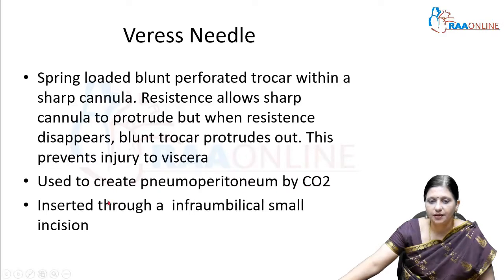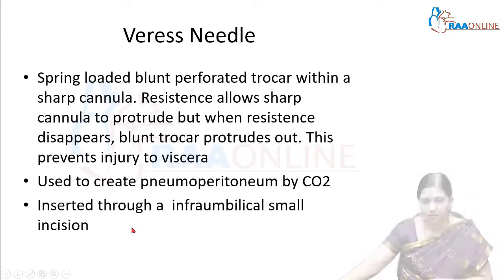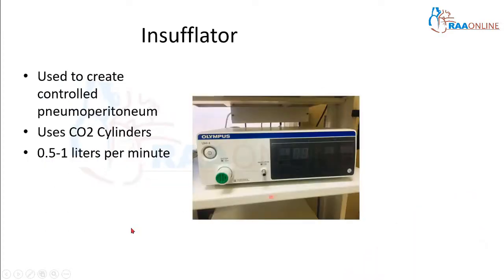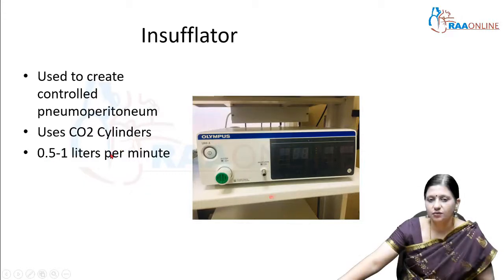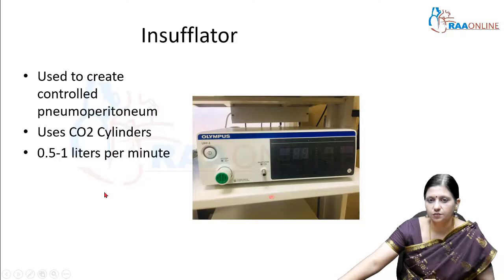Whenever resistance is encountered, the sharp cannula will protrude, but when the resistance disappears, the blunt rocker extends — this prevents injury to the viscera during insertion. It is used to create pneumoperitoneum by CO2 and is inserted through a small infraumbilical incision. The insufflator is used to create controlled pneumoperitoneum using carbon dioxide cylinders. Initially the flow rate is around 3 to 6 liters per minute, and after the pressure is stabilized, we reduce it to 0.5 to 1 liter per minute.